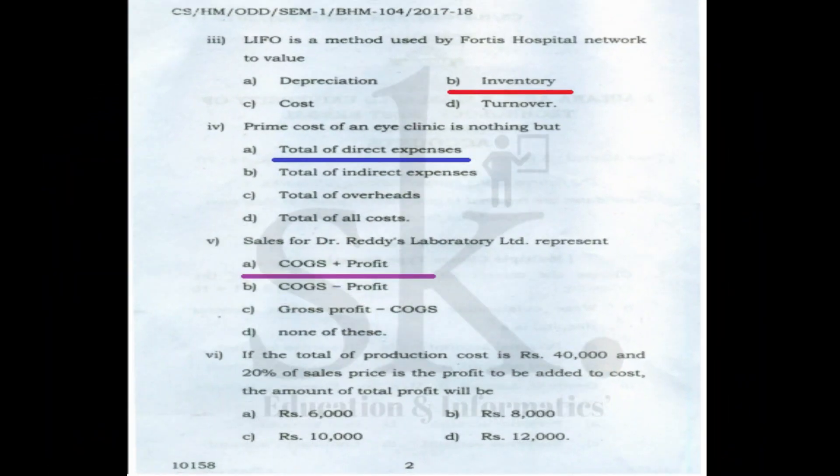Question number five: sales for Dr. Reddy's Laboratory represents — if we add profit to cost of goods sold we get sales, so the correct option is A.